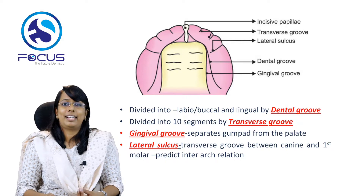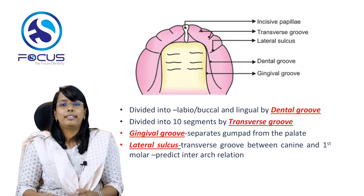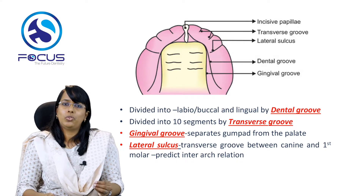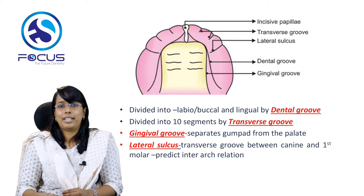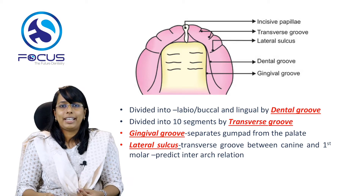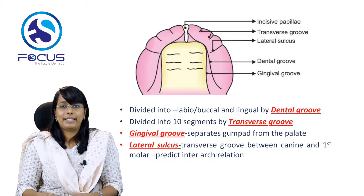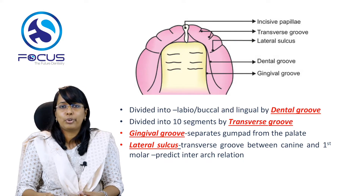The gum pads are divided into a labial portion and a lingual portion by the dental groove. Transverse grooves divide the gum pads into 10 segments each, corresponding to the development of a future primary tooth. The gingival groove separates the gum pad from the palate. The lateral sulcus, a transverse groove between the deciduous canine and first deciduous molar, is important in predicting the inter-arch relationship. All these grooves and sulci are important for exam purposes.